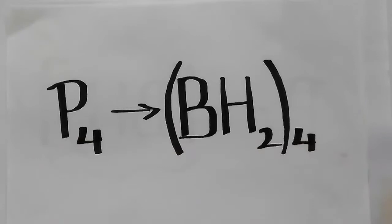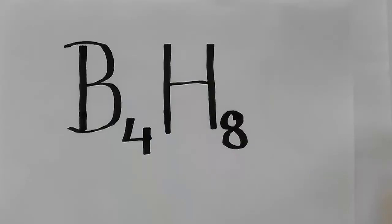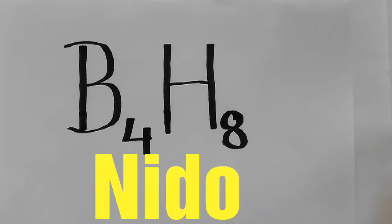Replacing phosphorus with BH2 we get B4H8. From the previous video on boron chemistry, we know that this structure is Nido.